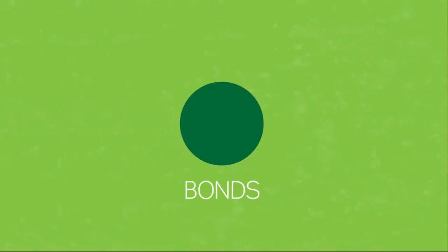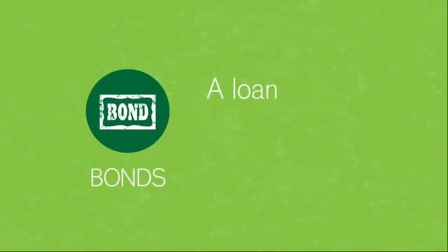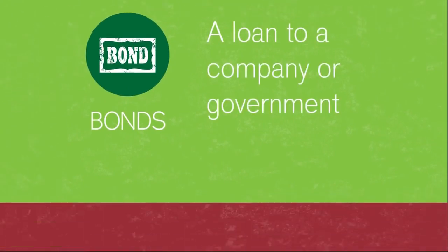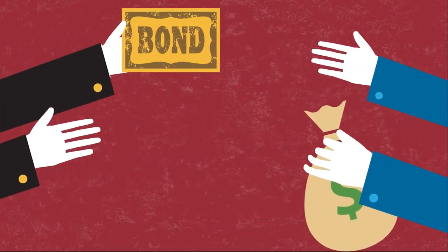Next up, bonds. Bonds are just a loan to a company or government. They borrow by selling a bond, which is simply a promise to repay the buyer in a fixed number of years at a fixed interest rate.